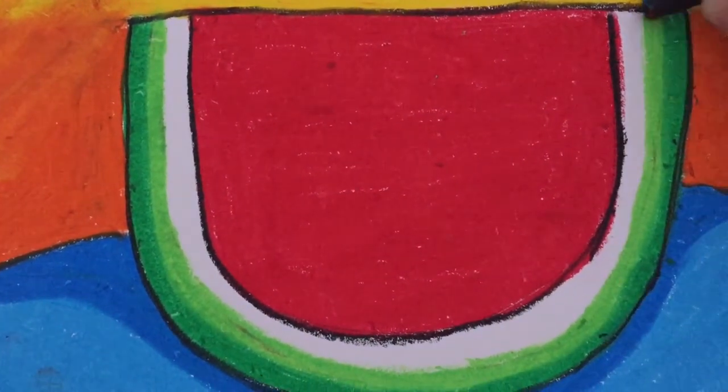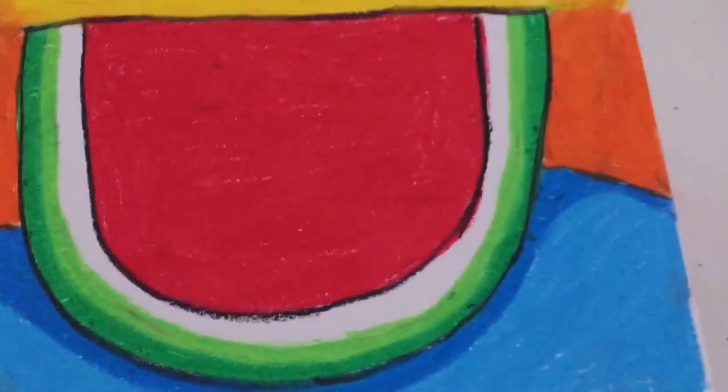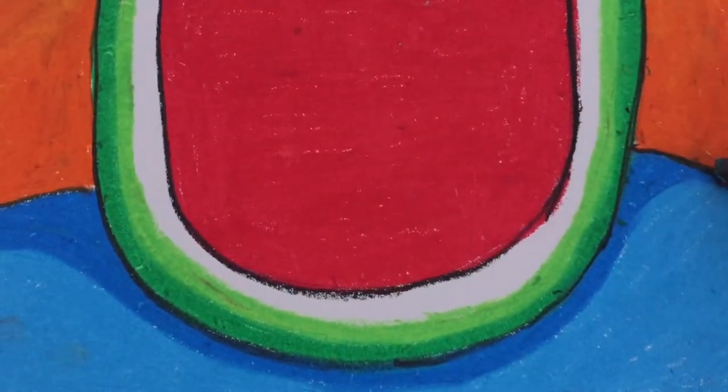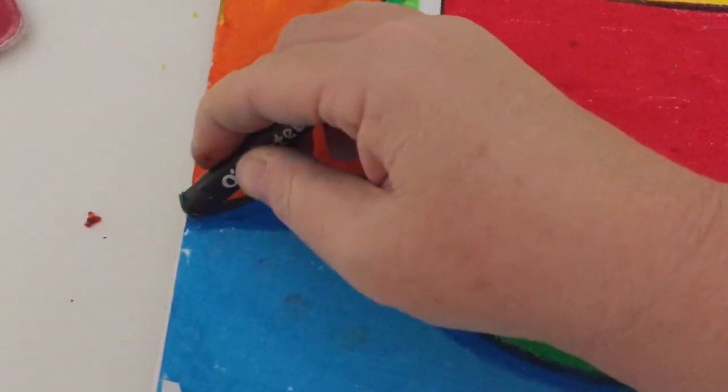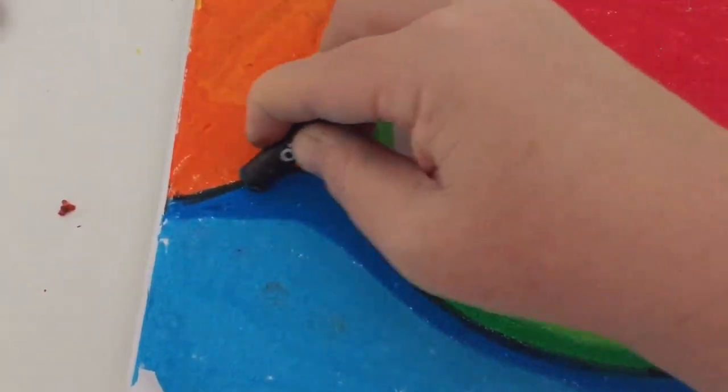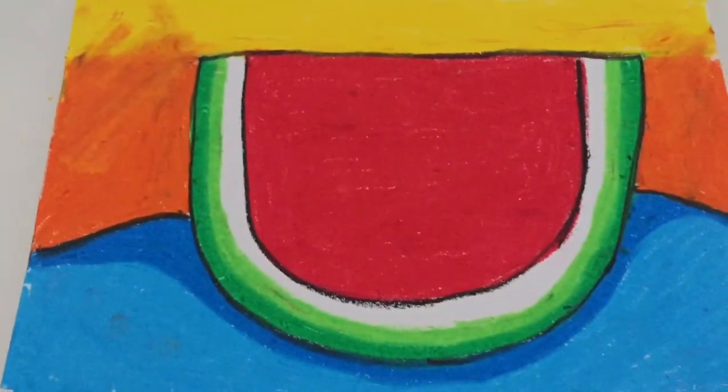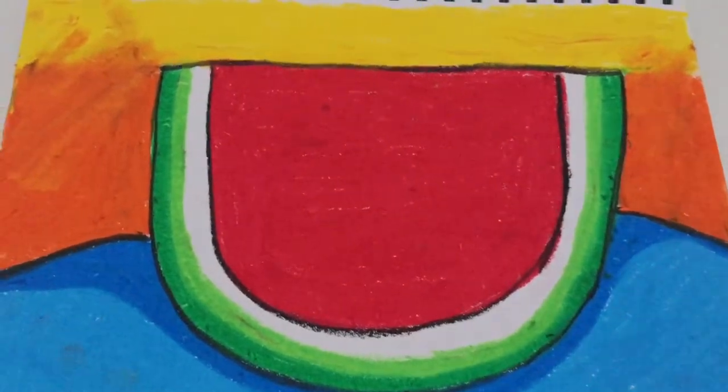Keeping with the black theme, I'm just going to do those outside edges, trace along where the blue and the orange are meeting. Then I'm going to put in my little stripes along the side there.